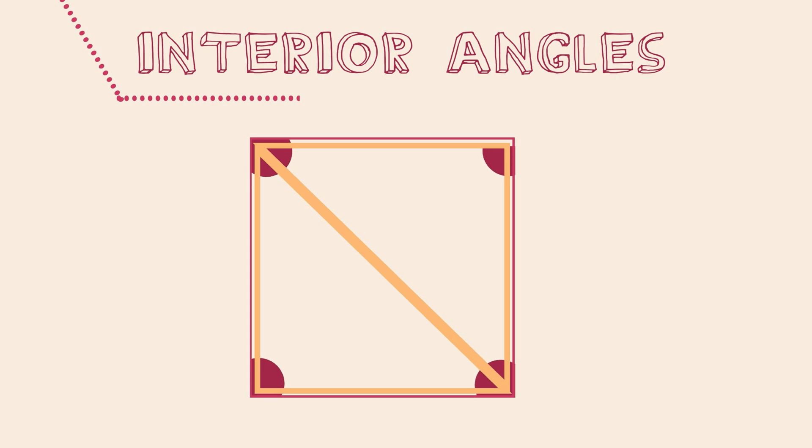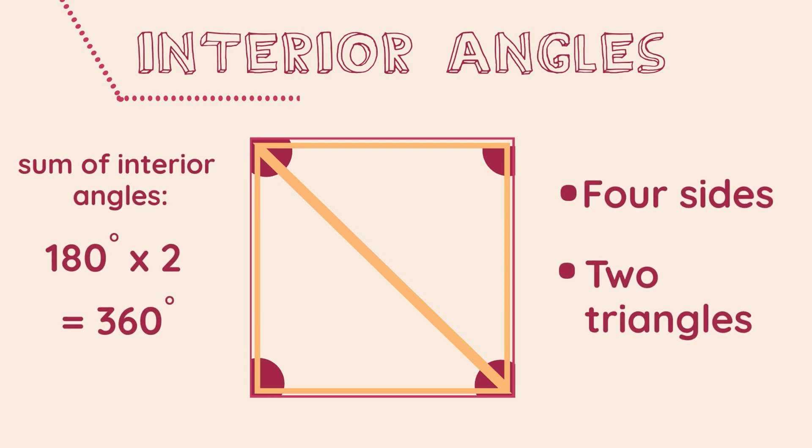Now let's look at this square. Notice that we can split the square up into two triangles exactly. We can use our knowledge of the interior angles of a triangle to calculate the sum of the interior angles of this square. As we have two triangles inside this square, the sum of the interior angles will equal two lots of 180 degrees.